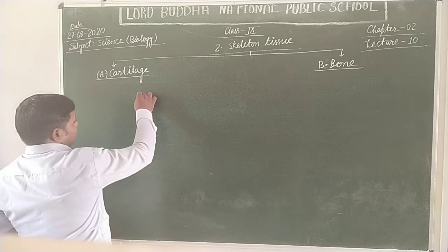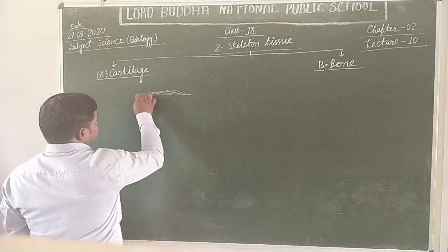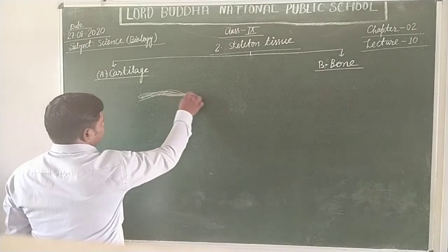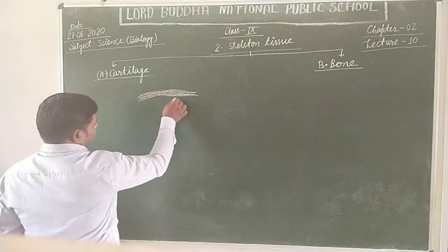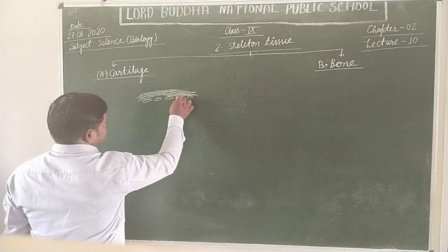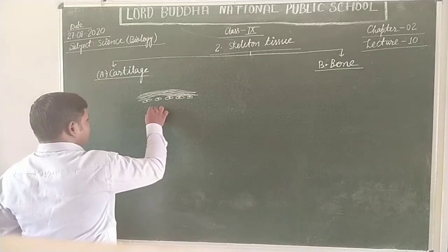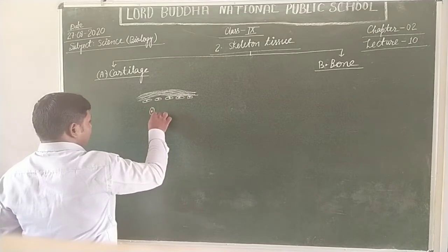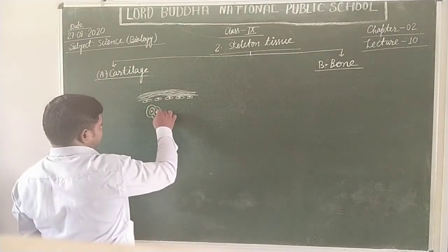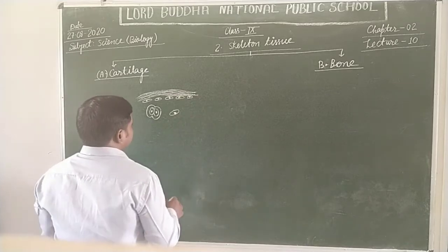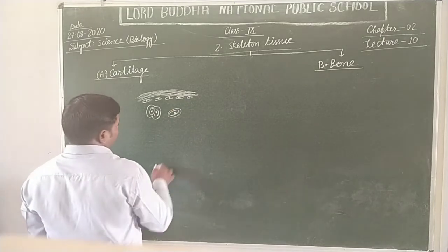The uppermost part of the cartilage is called the perichondrium. It contains cells that are called chondrocyte cells. Around the chondrocyte cells, there is a hollow space that surrounds the chondrocyte cells. Such a surrounding space is known as lacunae.